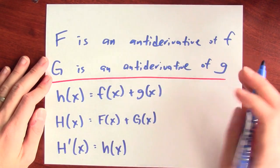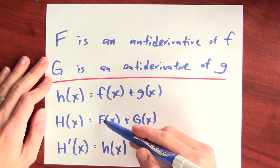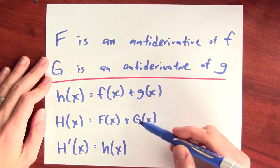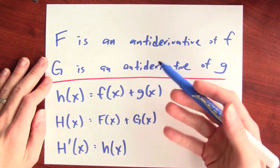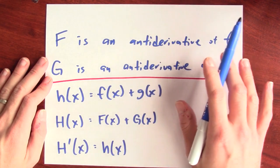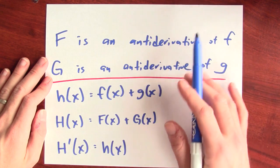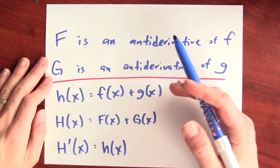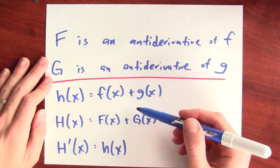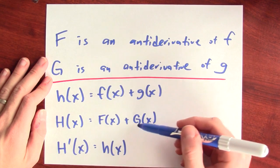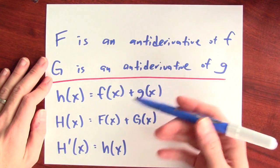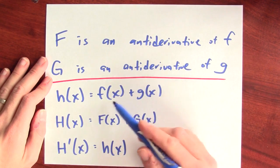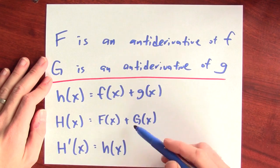And that's true, right? Because if I differentiate big F, I get little f. And if I differentiate big G, I get little g. And the derivative of a sum is the sum of the derivatives. So the anti-derivative of a sum is the sum of the anti-derivatives.